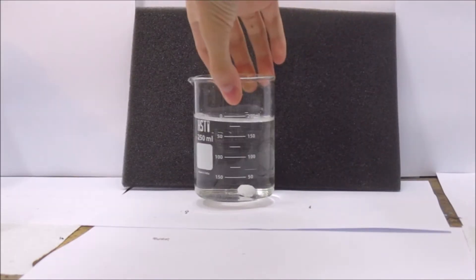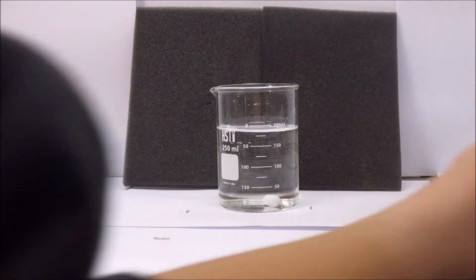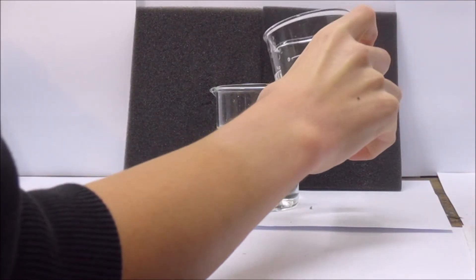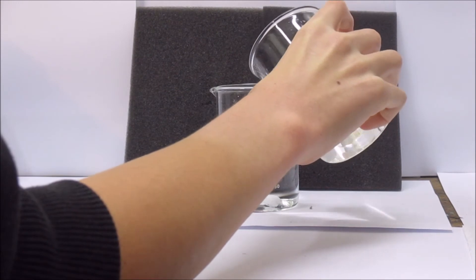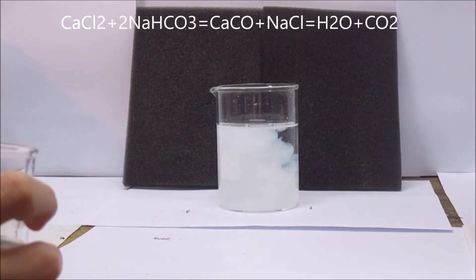I then added a black background and put the solution there. I then added the two solutions together. Immediately, the calcium carbonate precipitated out as a fine white solid.